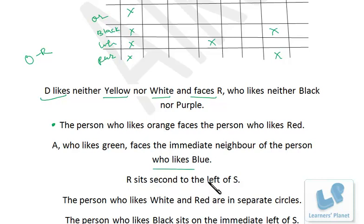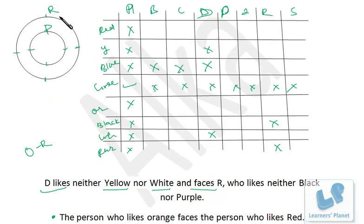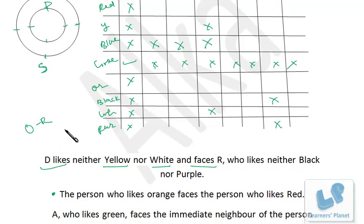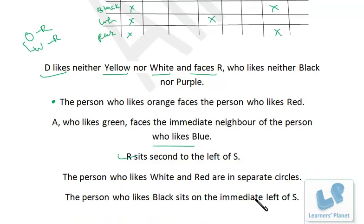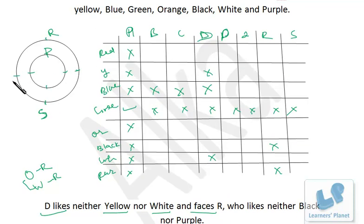R sits second to the left of S, meaning R and S are on opposite corners. The person who likes white and red are in separate circles, so orange and white are in the same circle. The person who likes black sits on the immediate left of S — that person likes black and is in the outer circle. So cancel black for A, B, C, D — they are all canceled for black.